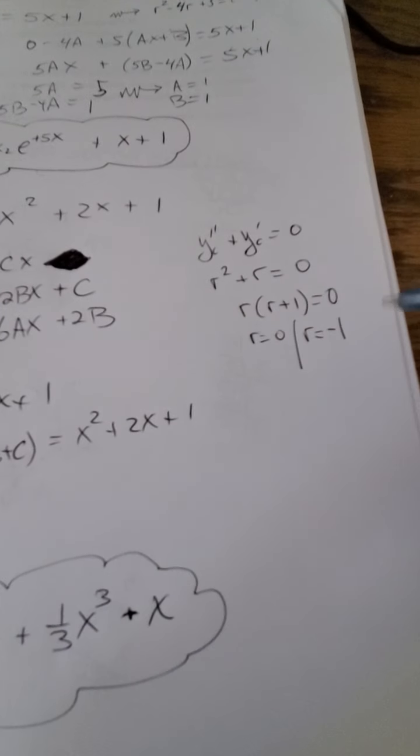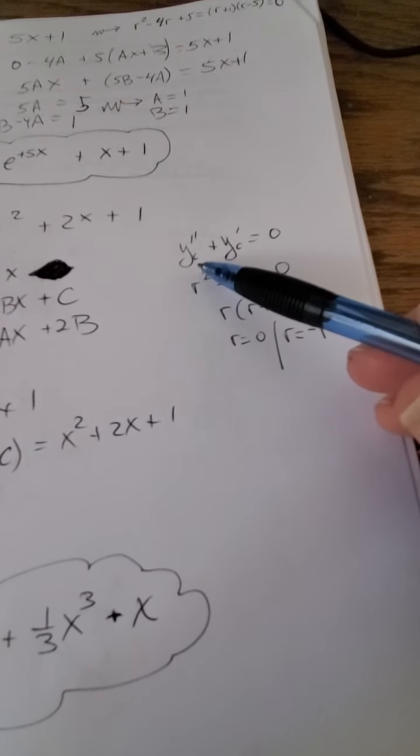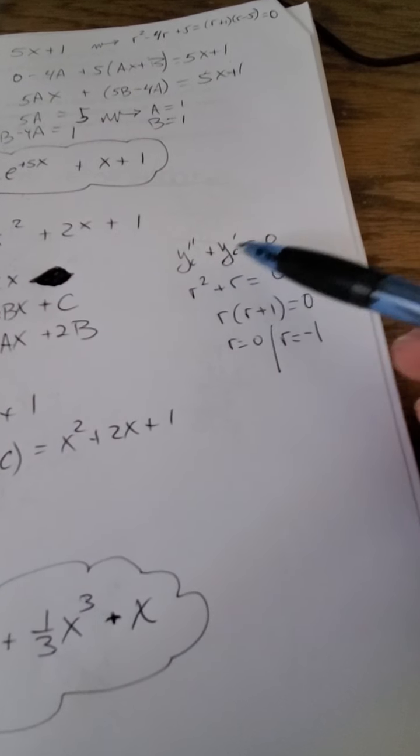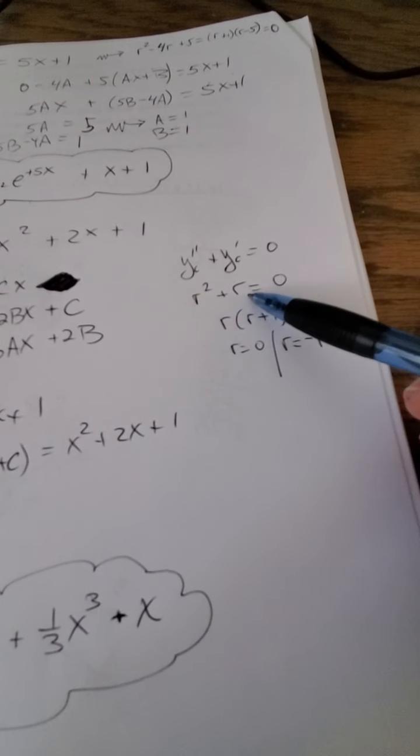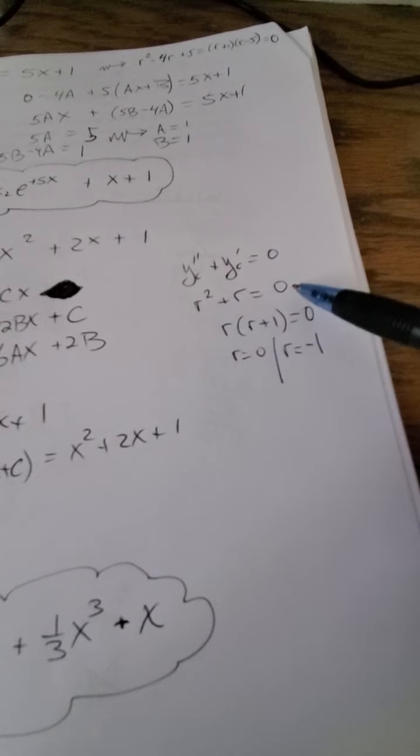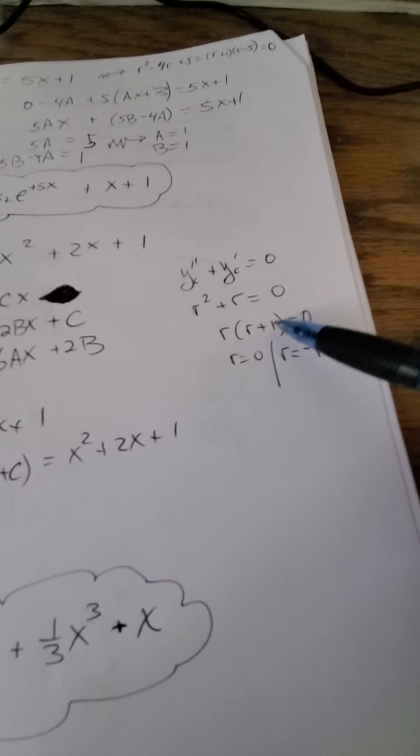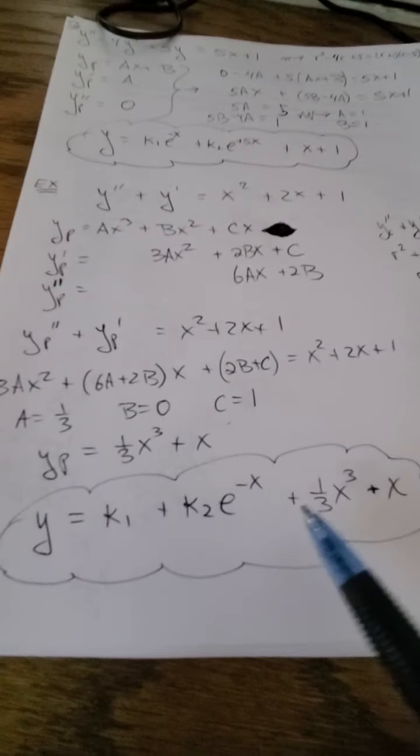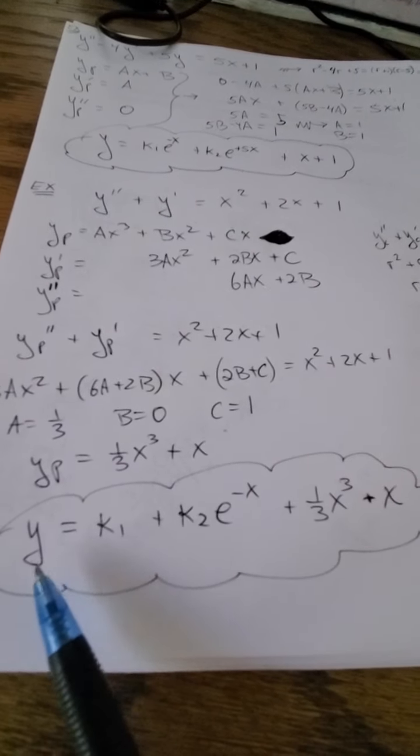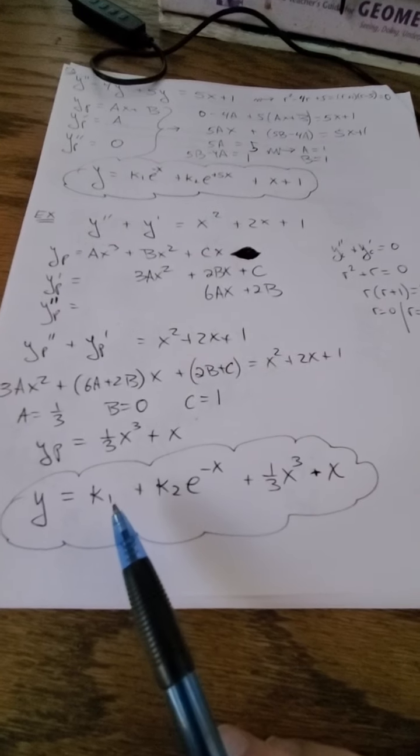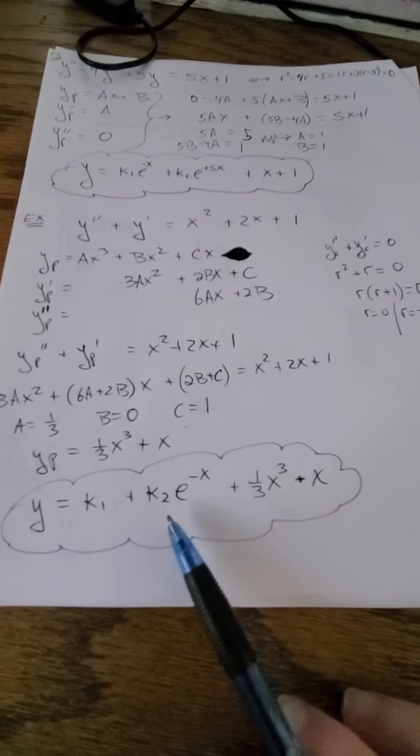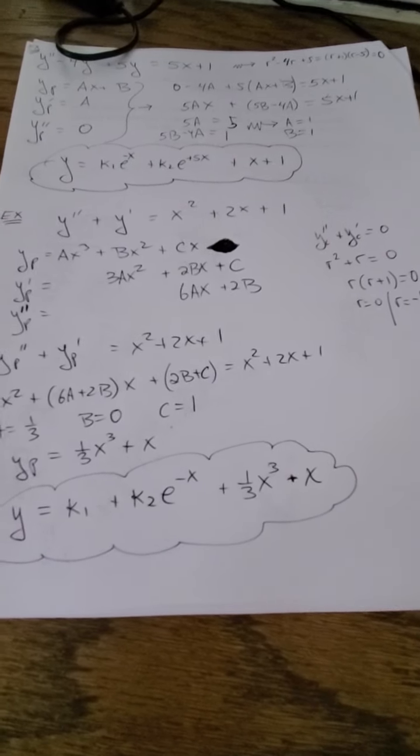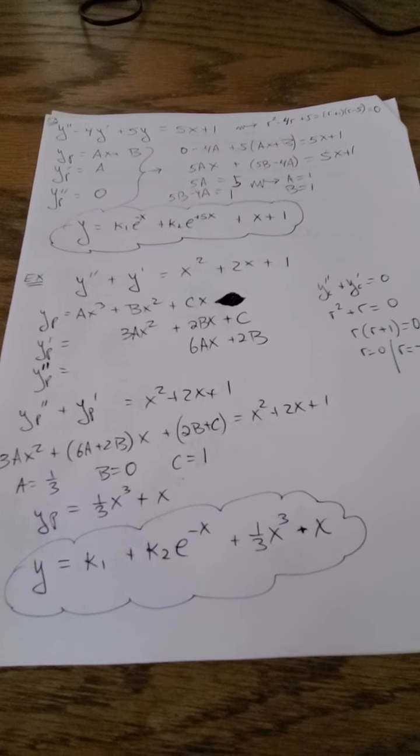And that really just comes from if I have, for the corresponding of yc double prime plus yc prime equals 0, so my characteristic polynomial is r squared plus r equals 0, which gives us r equals 0 or r equals negative 1. Again, that would yield to e to the 0 or e to the negative 1 x, so that's why I get y equals k1 plus k2 e to the negative x plus 1 third x cubed plus x.